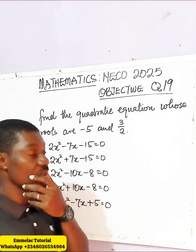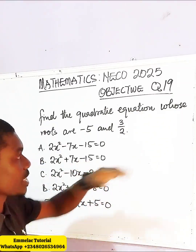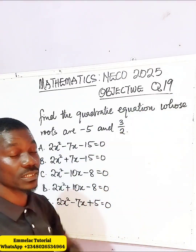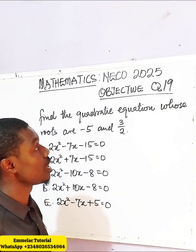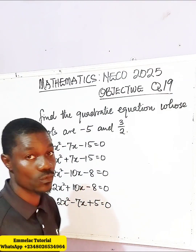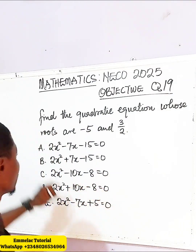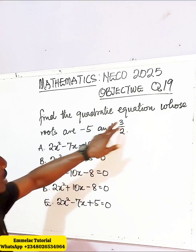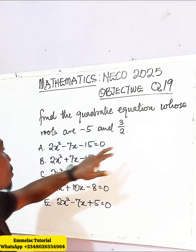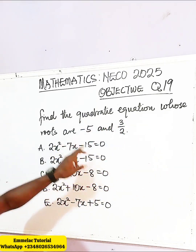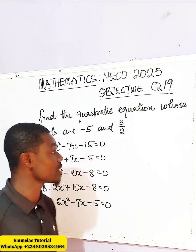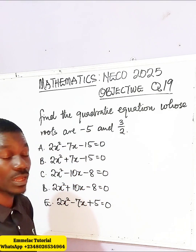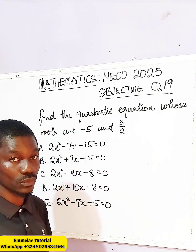Welcome to MilaConline Tutorial. Here is question 19 of the NECO205 objective question. Find the quadratic equation whose roots are negative 5 and 3 over 2.